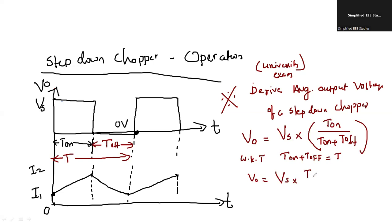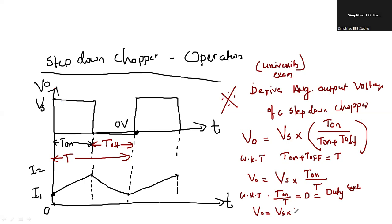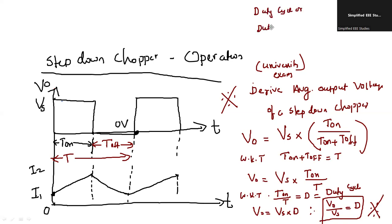Substituting: V0 = Vs × (T_on / T). We know that T_on divided by total time period T is nothing but D — the duty cycle or duty ratio of the switch. Therefore, V0 / Vs = D, where D is known as duty cycle or duty ratio.